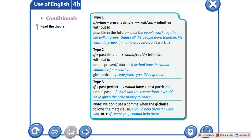Note — примечание. We don't use a comma when the if clause follows the main clause. Мы не используем запятую, то есть не разделяем условие и результат, если условие следует за результатом. Например: I would help them if I were you — без запятой. Но: if I were you, I would help them — с запятой.